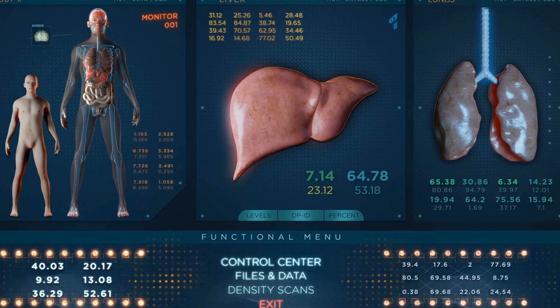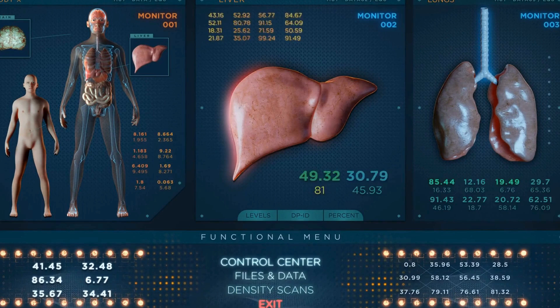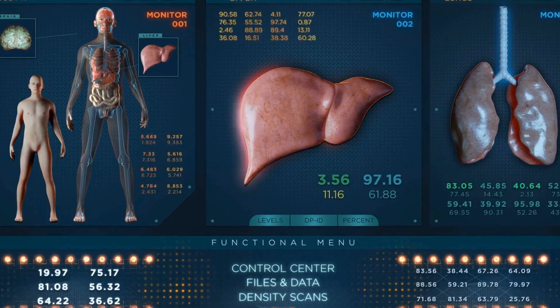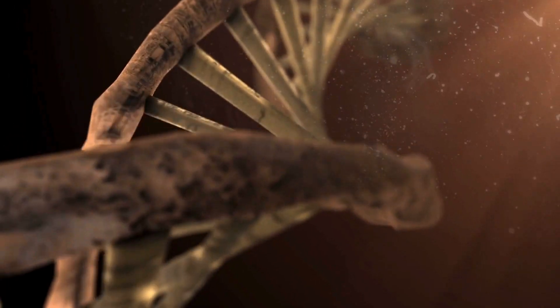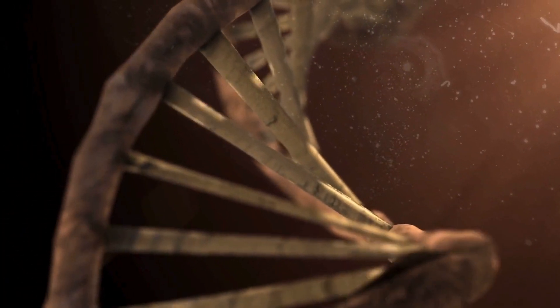For hemophilia A patients, Roctavian delivers neutralized viruses to the liver, instigating the insertion of crucial clotting gene. This transformative approach could redefine treatment for genetic disorders.